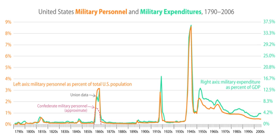The Moro Rebellion was an armed insurgency between Muslim Filipino tribes in the Southern Philippines between 1899 and 1913. Pacification was never complete as sporadic anti-government insurgency continues into the 21st century, with American advisors helping the Philippine government forces.